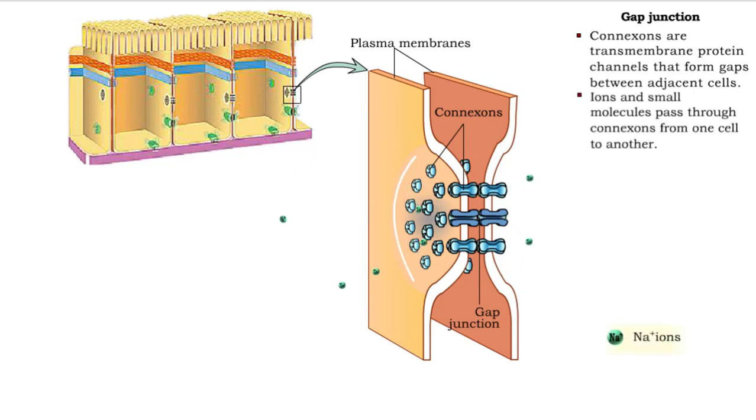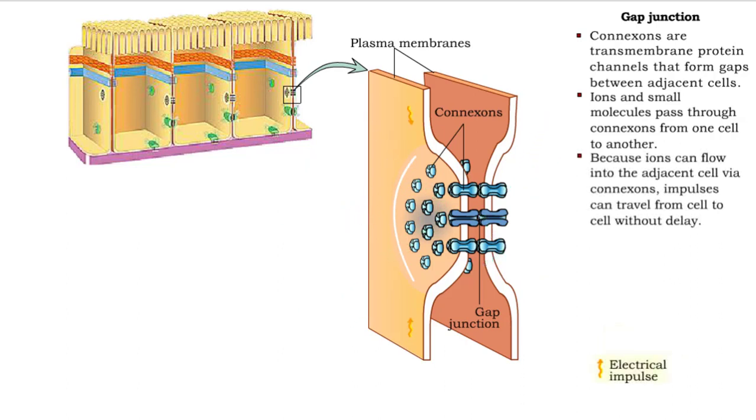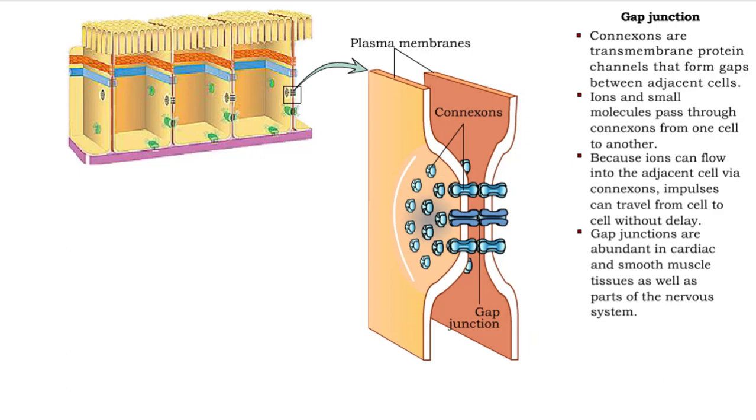Gap junctions allow ions and other small molecules to pass freely from one cell to another. Gap junctions also allow electrical impulses to pass rapidly from one cell to another. Gap junctions are particularly abundant in some types of muscle tissue.